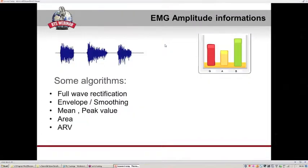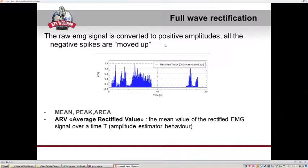Starting with EMG amplitude information: the on/off and more-or-less characteristics can be derived from quantitative amplitude analysis. From the raw signal, full wave rectification, envelope, or smoothing algorithms can be used. Full wave rectification converts all negative amplitude spikes of the raw EMG signal to positive values. This is done not only for easier reading but mainly because standard amplitude parameters like mean, peak, maximum, or area can then be applied to the signal.